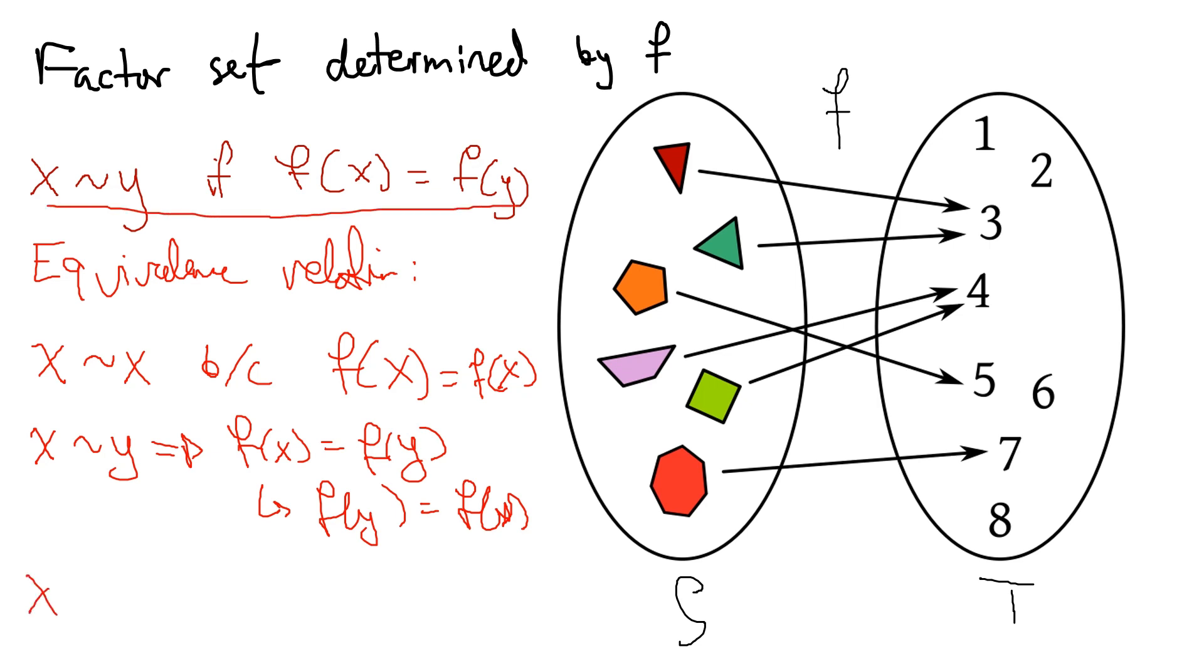And lastly, if x is equivalent to y and y is equivalent to z, then we have f of x is equal to f of y. But here we said this is f of z. And so f of x is equal to f of z.